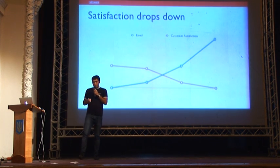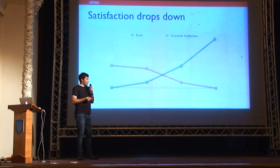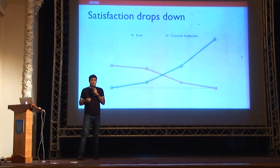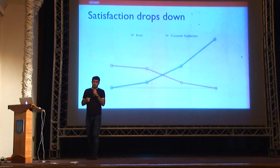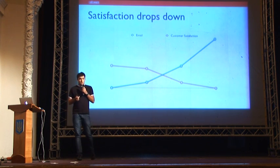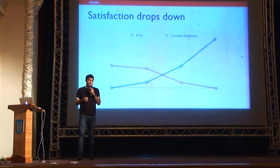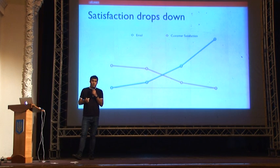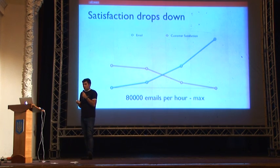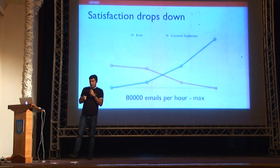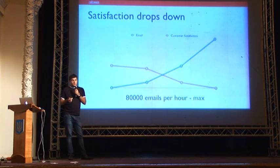As we grew, we sent more and more emails and customer satisfaction dropped. We became slower and slower, and it wasn't suitable for our business. The maximum throughput of the system was 80,000 emails per hour.